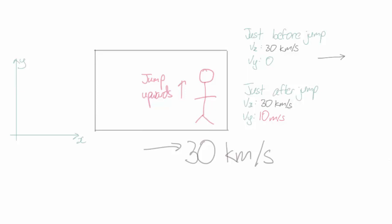Because for that velocity to change, I need some kind of horizontal force to act on me, to slow me down. But that doesn't happen. I just jump upwards. So all that happens is I have a velocity of 10 meters per second added to my velocity of 30 kilometers per second.